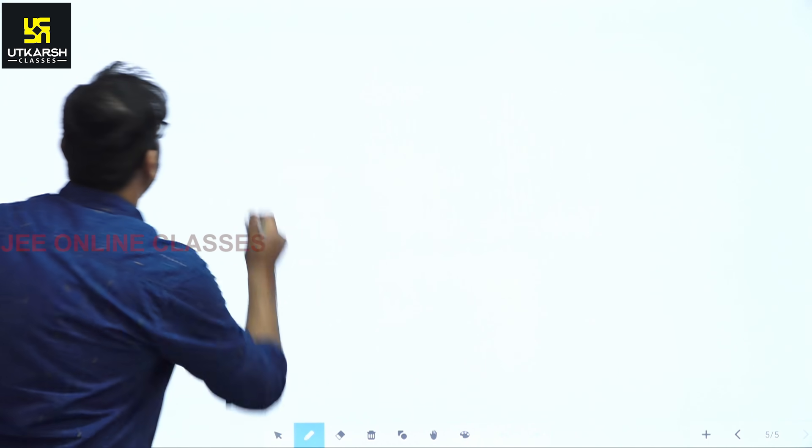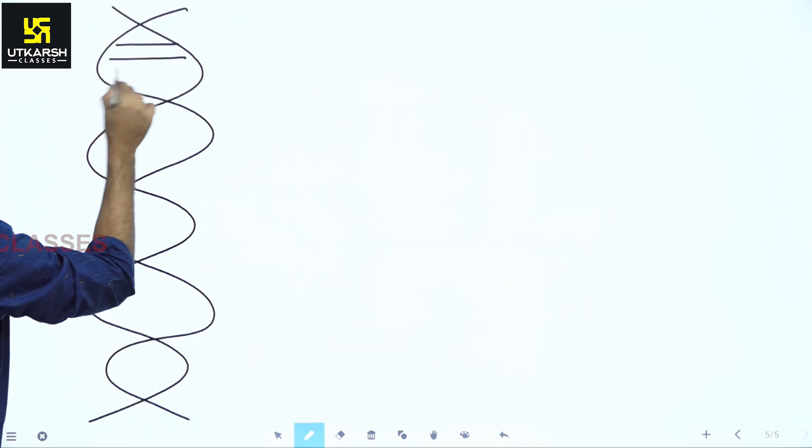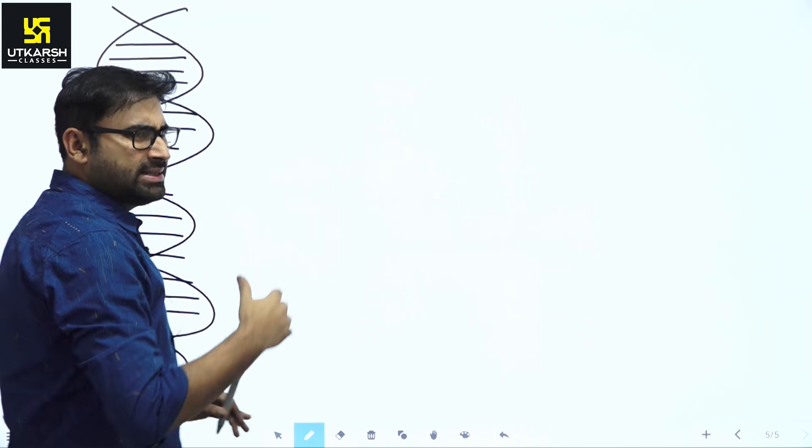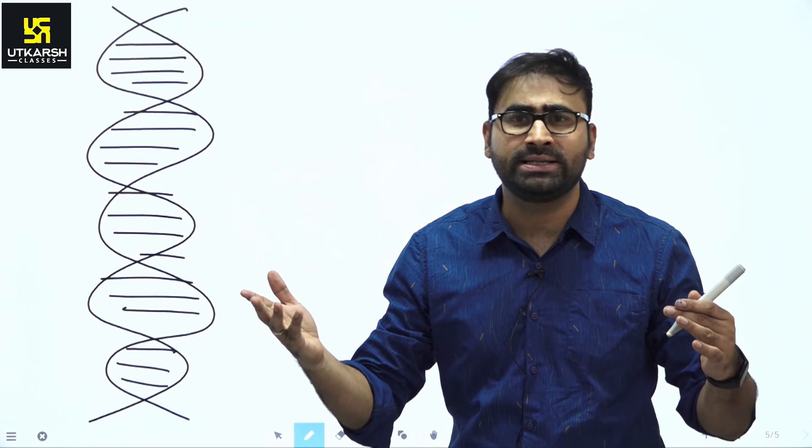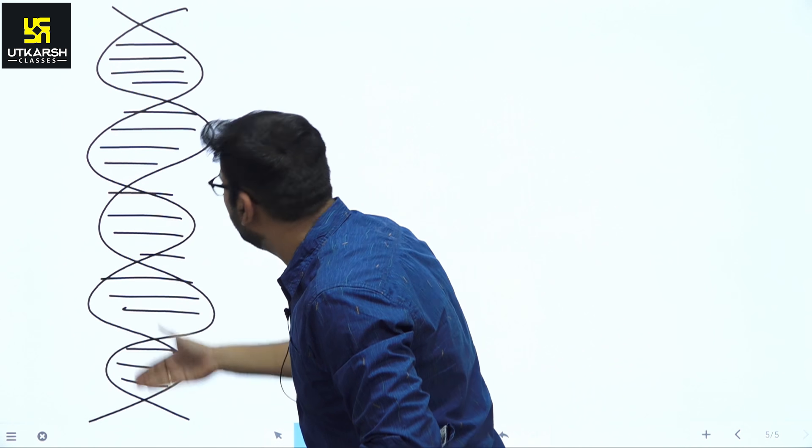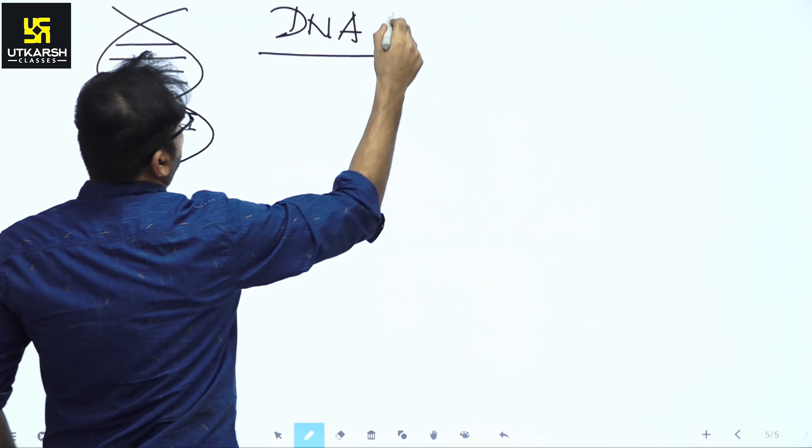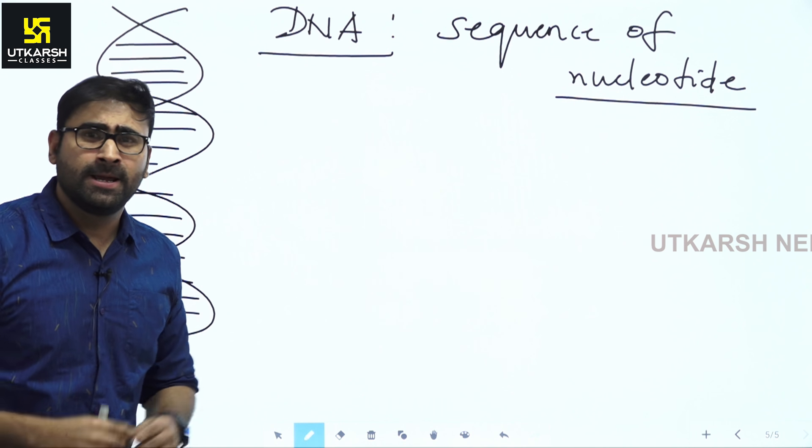So, we have all seen this double helical structure given by Watson and Crick. This is a DNA molecule. You know, when this DNA structure was discovered by Watson and Crick, they said, this is a beautiful structure and such a beautiful structure just had to exist. So, DNA is a double helix model. And what we know about it? We know that this DNA is a polymer or sequence of nucleotide. And it is a double helix model.